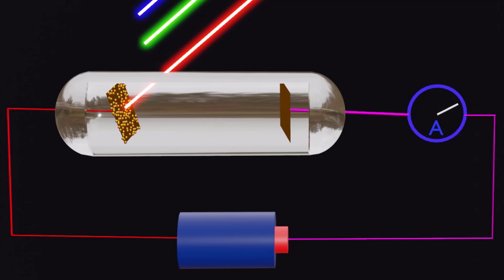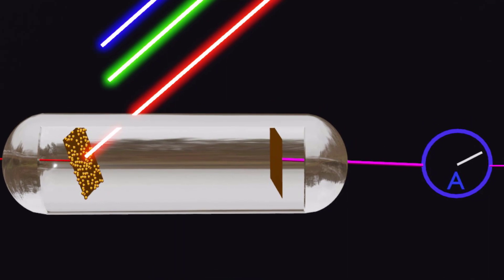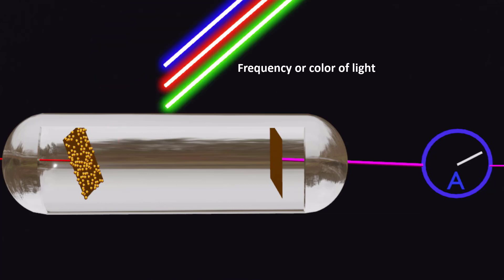It's important to note that the photoelectric effect depends on two main factors: the frequency and intensity of the incident light. Frequency refers to the color of light, while intensity refers to its brightness or the number of photons per unit area per unit time.